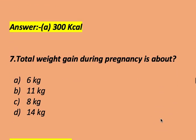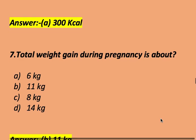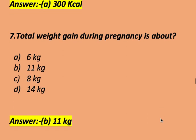Total weight gain during pregnancy is about: 6 kg, 11 kg, 8 kg, or 14 kg. The right answer is 11 kg. Total weight gain during pregnancy is about 11 kg.